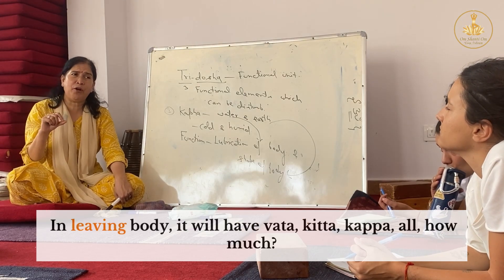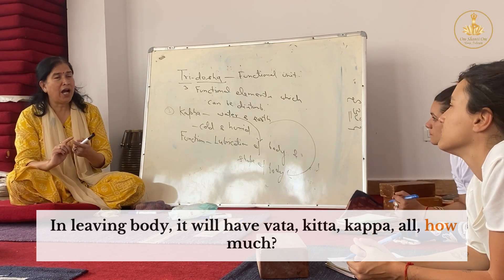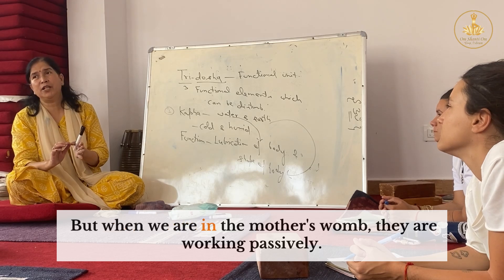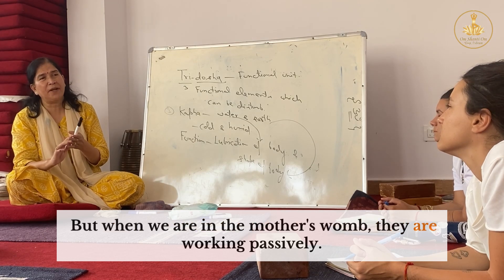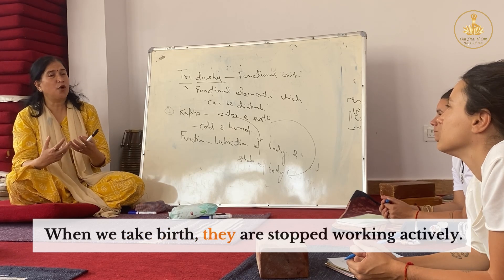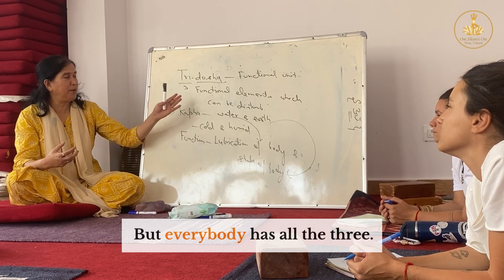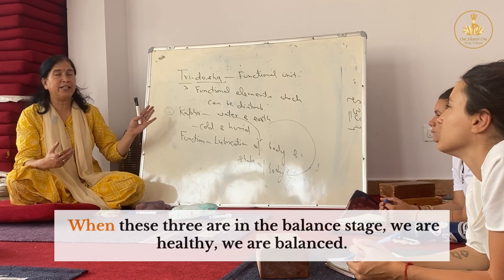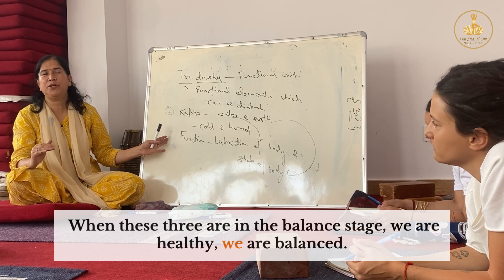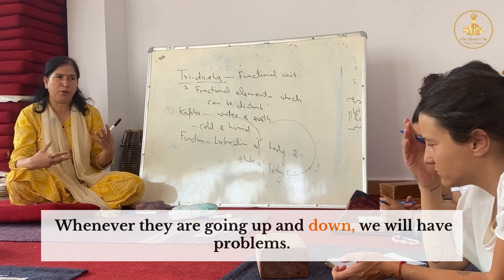In a living body, there is Vata, Pitta, and Kapha — all three. The difference is how much of each. When we are in the mother's womb, they are working passively. When we take birth, they start working actively. But everybody has all three. When these three are in a balanced state, we are healthy and balanced. Whenever they go up and down, we will have problems.